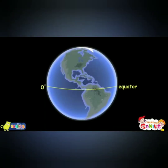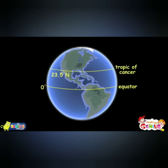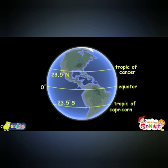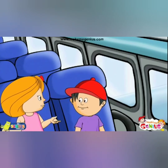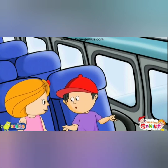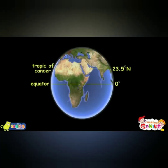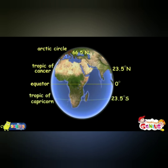The equator lies at zero degrees, halfway between the North and South Pole. There are several other significant lines of latitude: the Tropic of Cancer and Arctic Circle to the north of the equator, and the Tropic of Capricorn and Antarctic Circle to the south. The Tropic of Cancer is 23.5 degrees north, the Arctic Circle is 66.5 degrees north, and the Tropic of Capricorn is 23.5 degrees south.